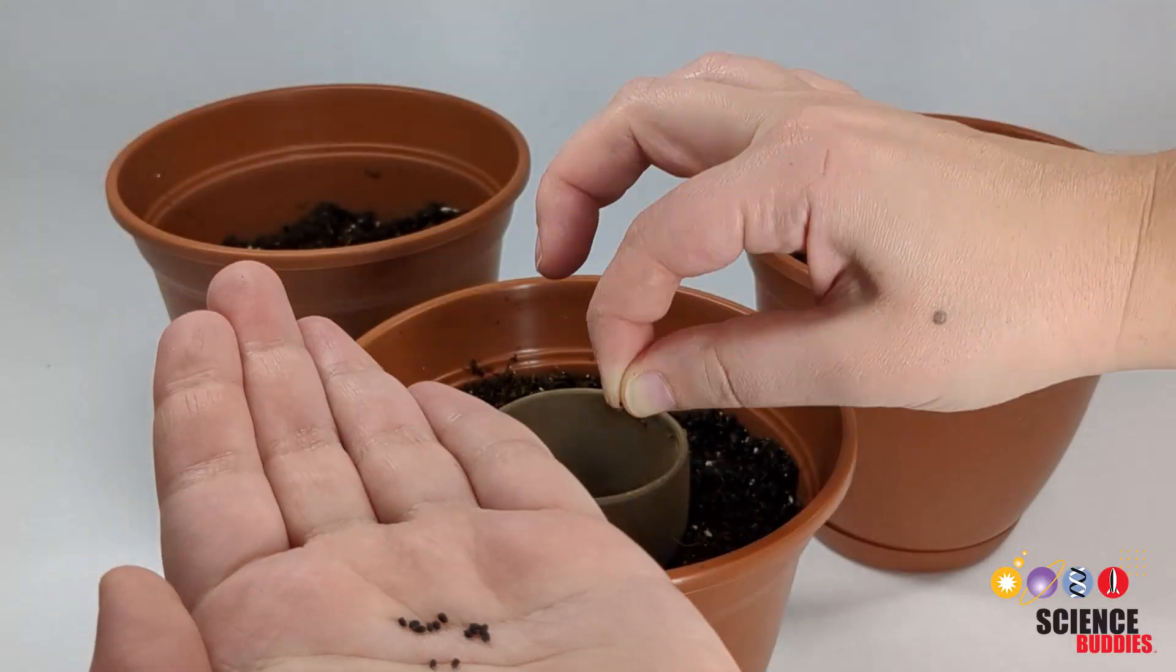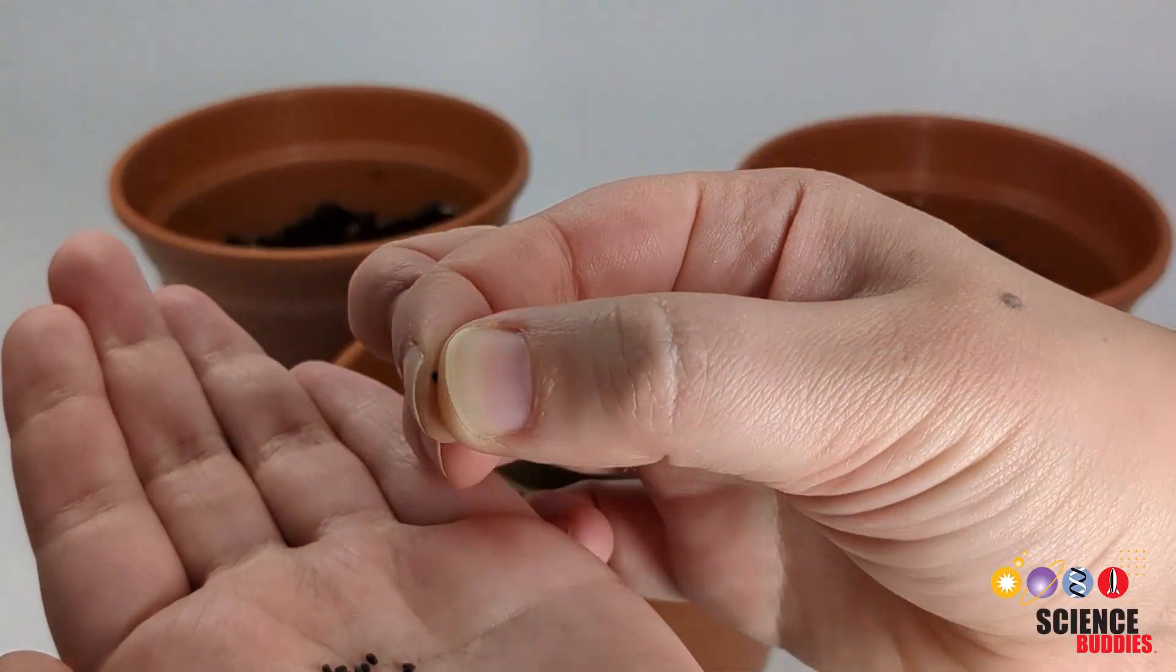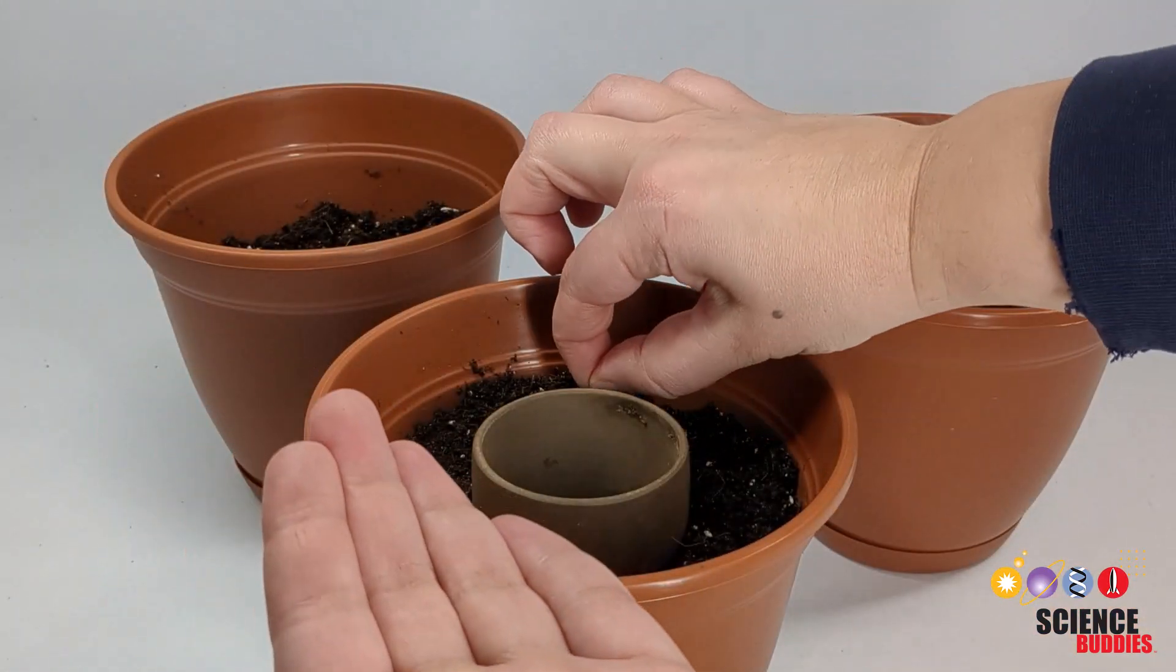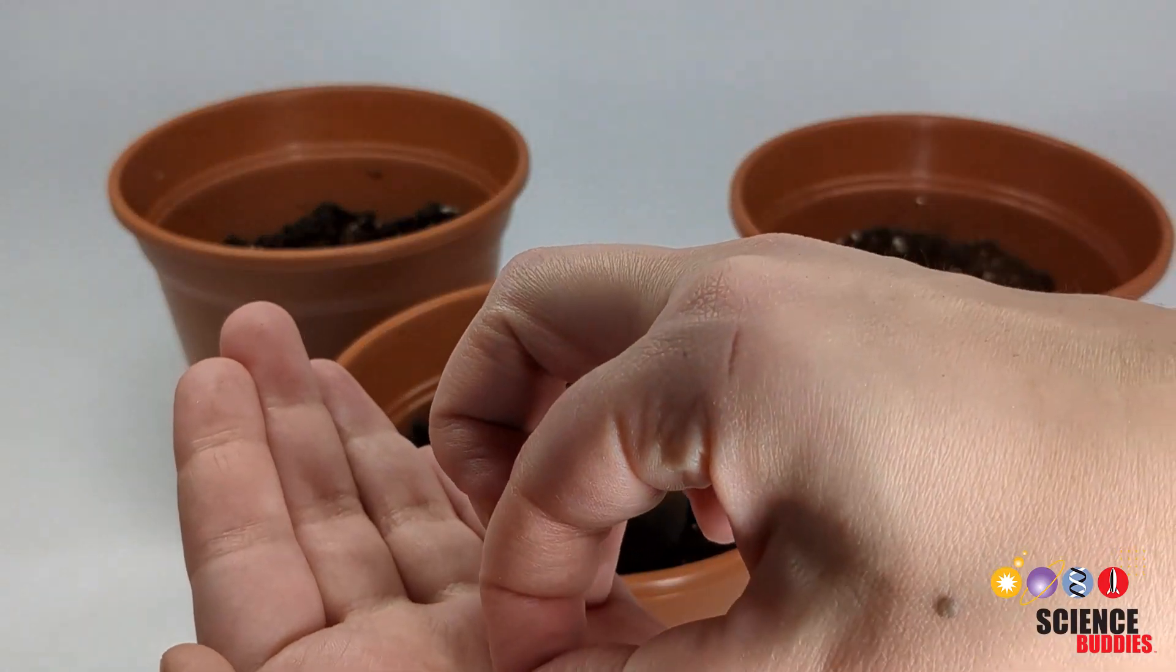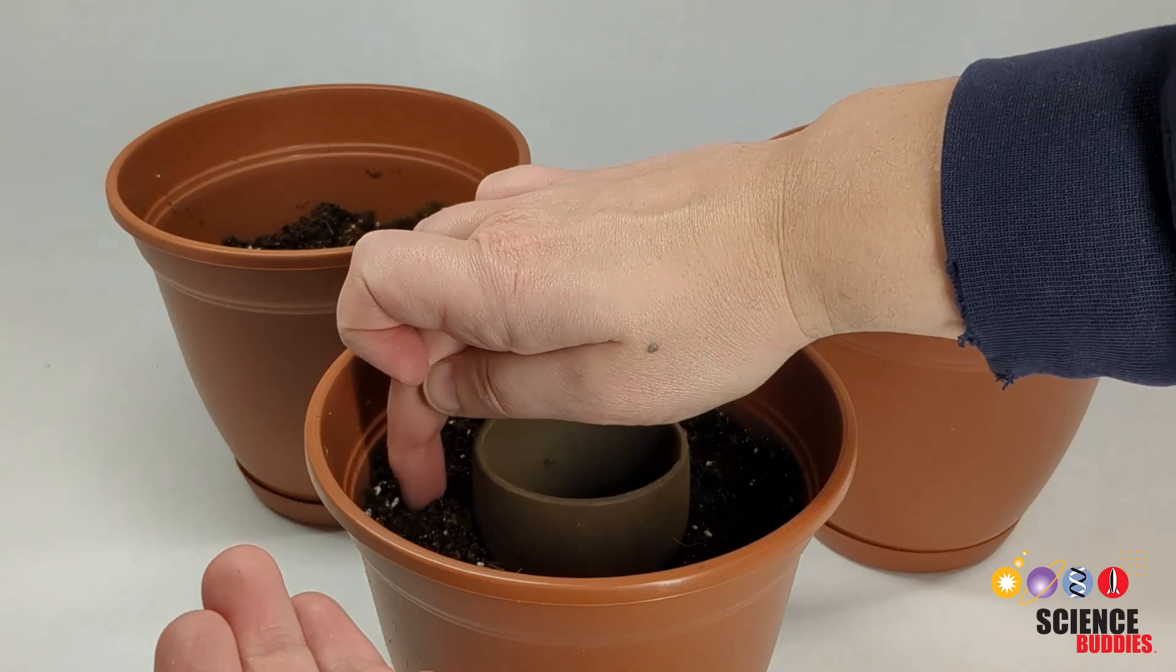Plant three to four seeds per pot with the same spacing for each condition. Use the oya pot as an example of how to place your seeds for each condition, while leaving a spot in the middle for watering. Follow the instructions on your seed packet to plant the seeds at the right depth in the soil.